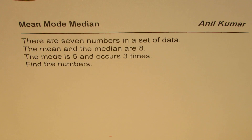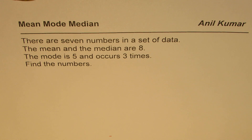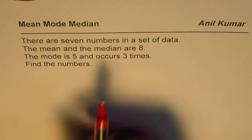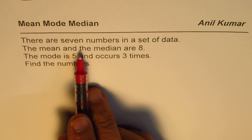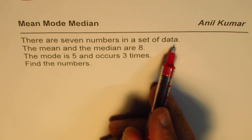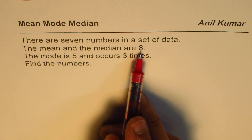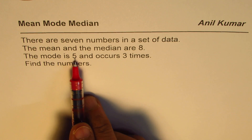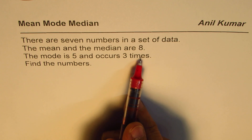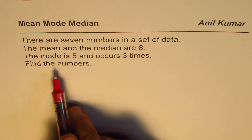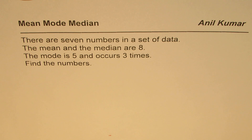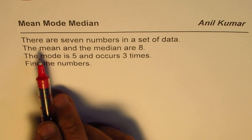I'm Adil Kumar and we are exploring central tendencies: mean, mode, and median. The question is: there are seven numbers in a set of data, the mean and the median are eight, the mode is five and occurs three times — find the numbers. You can pause the video, answer the question, and then look into my suggestions.